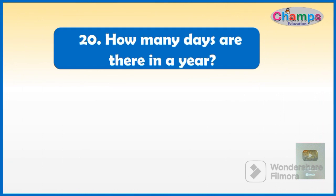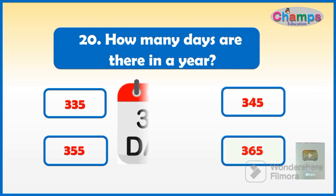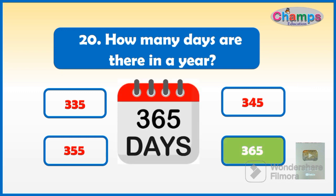How many days are there in a year? Options: 335, 345, 355, or 365. And your time starts now. The correct option is 365.